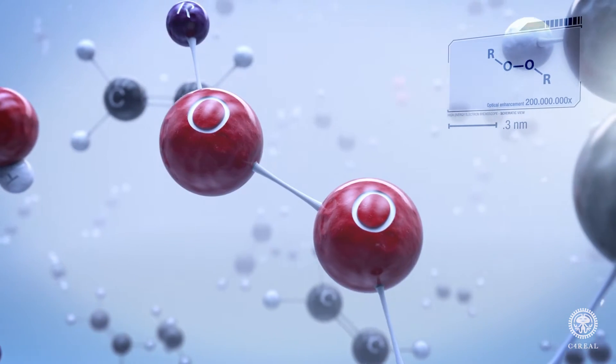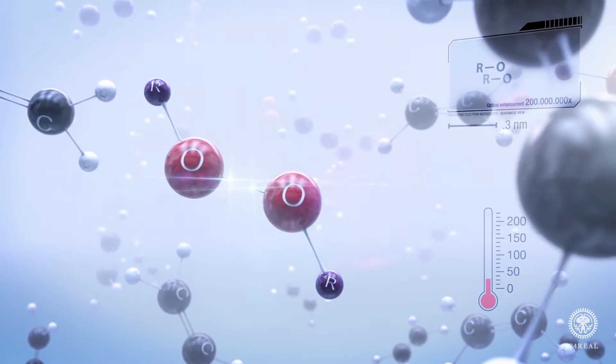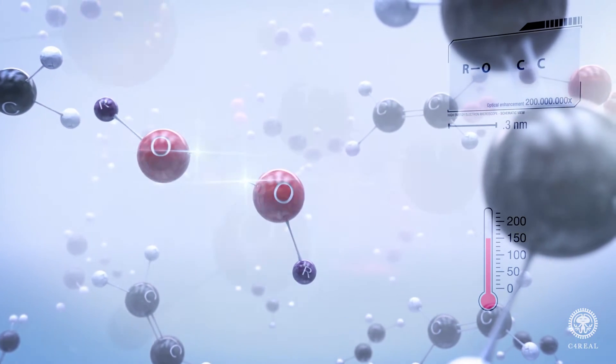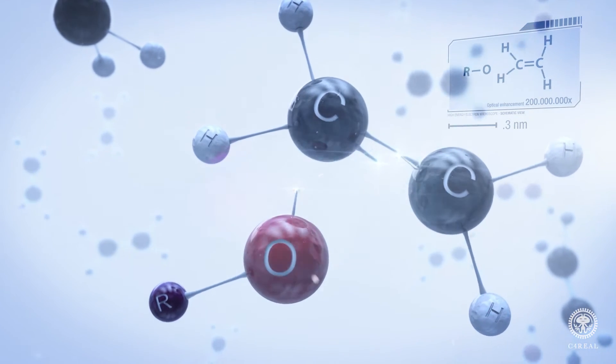For example, organic peroxides and metal alkyls. They initiate the polymerization reaction, which is the basis for creating plastics and rubbers.